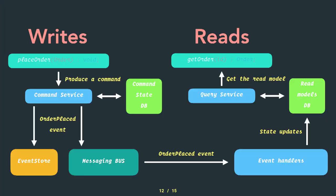Let's dig into an example — we're going to do an order service for buying a hamburger. On the right side you have the write side: a placeholder method produces a command, it goes to the command service which does some validation — maybe using a state database — and if the command is good, it emits an event called 'order placed', which goes to the event store (a history of all events) and is broadcast to a messaging bus.